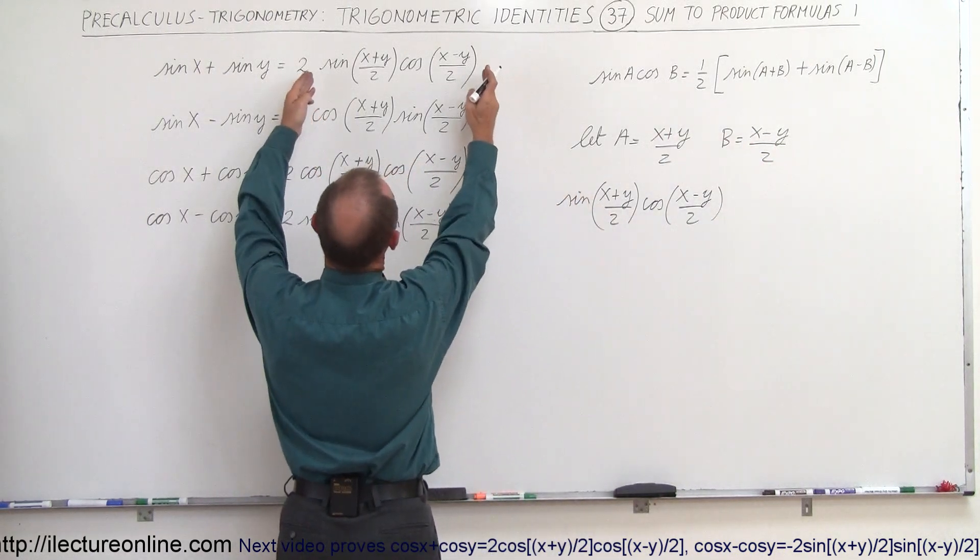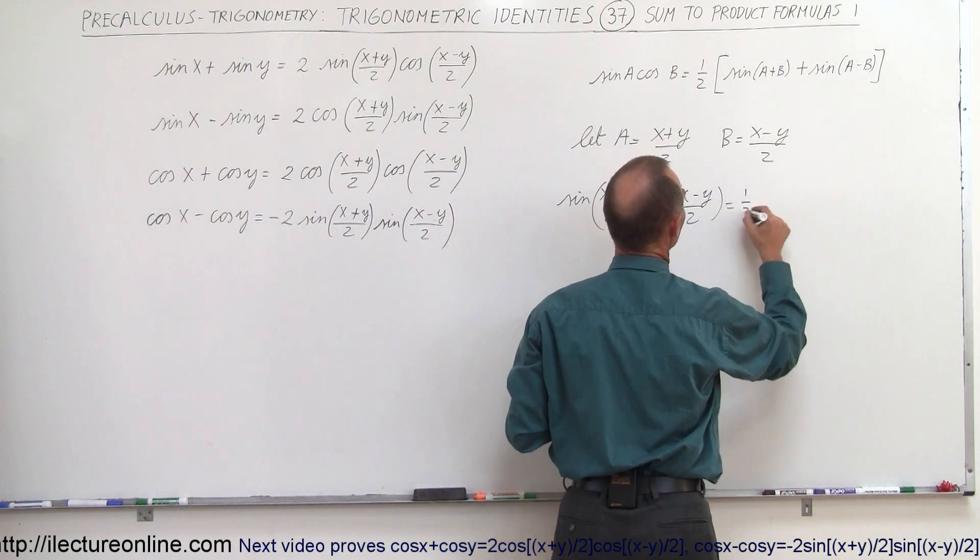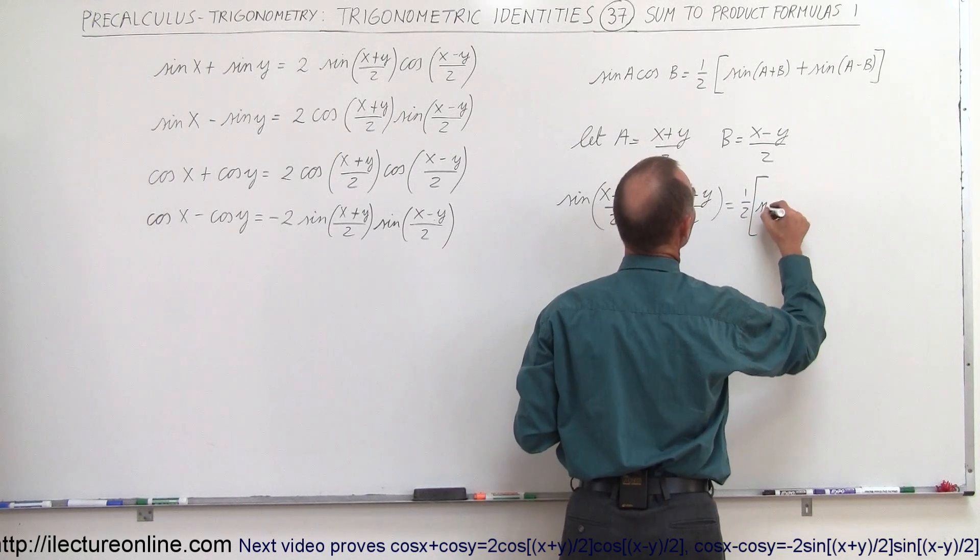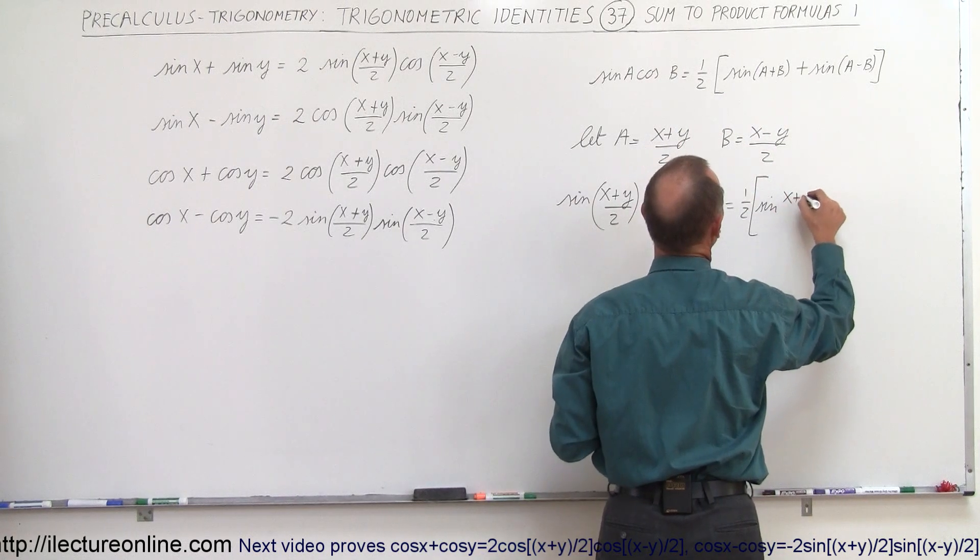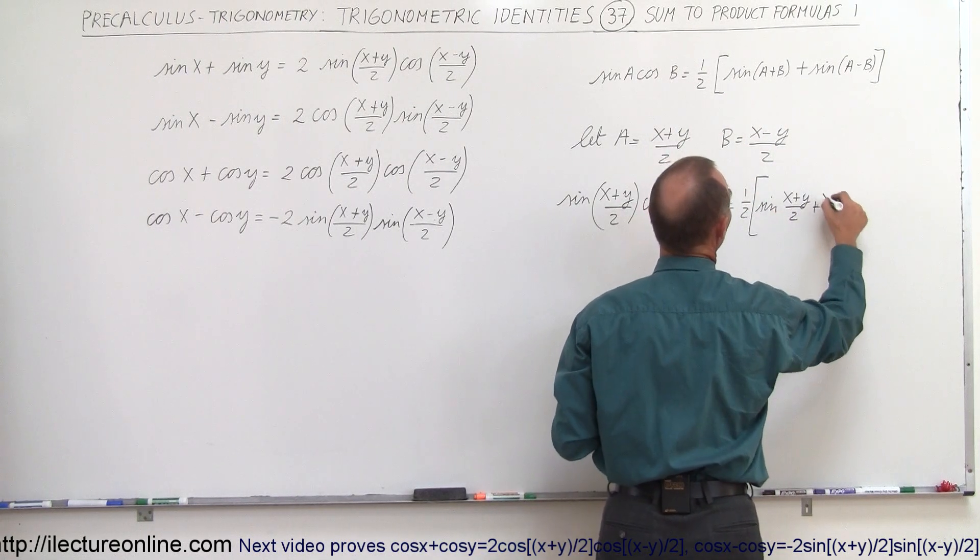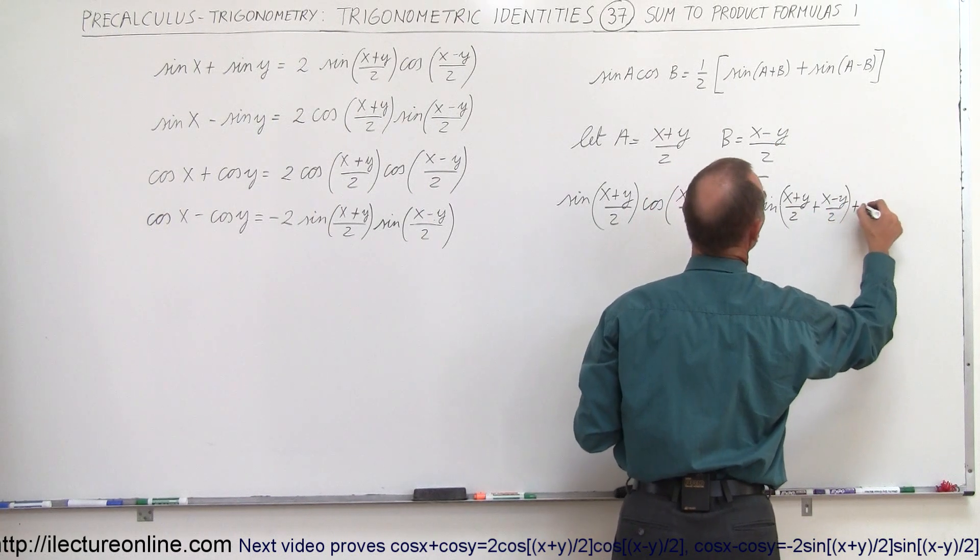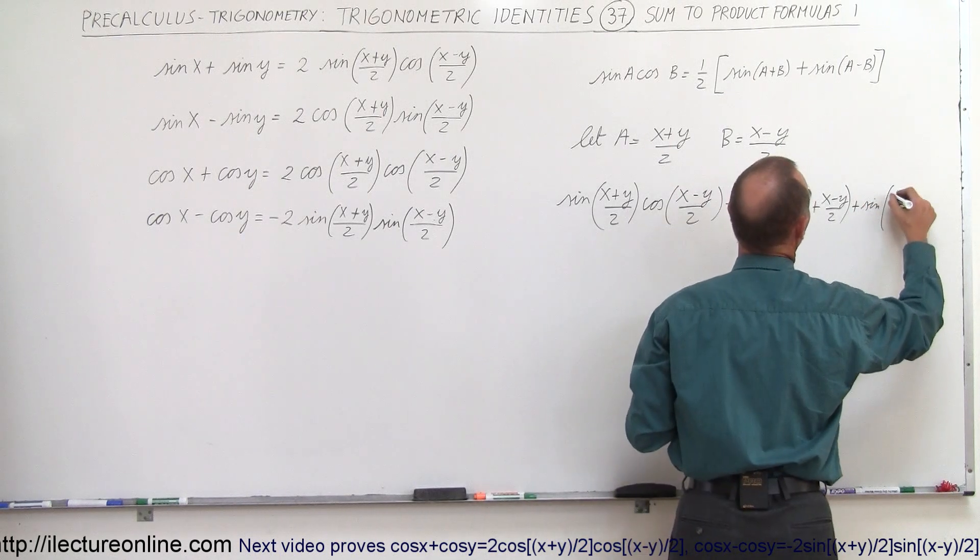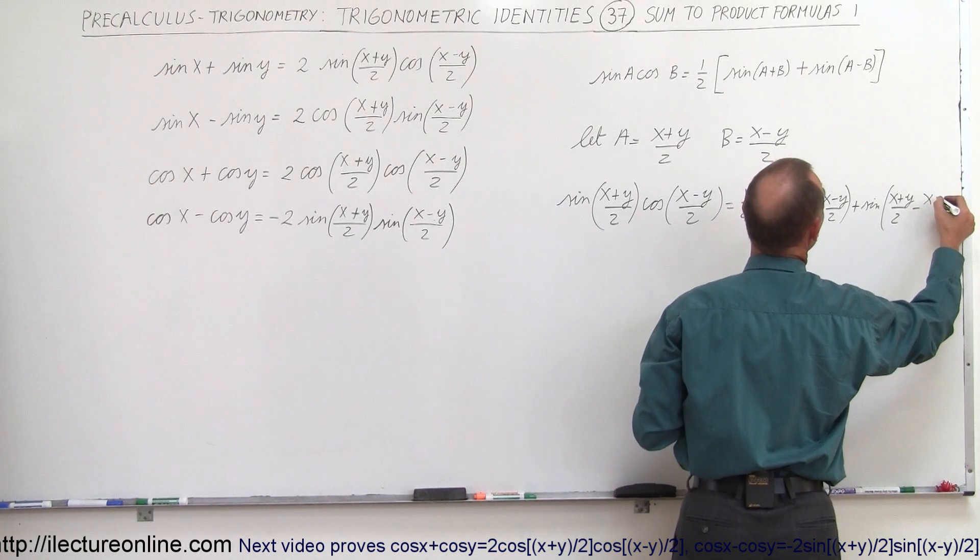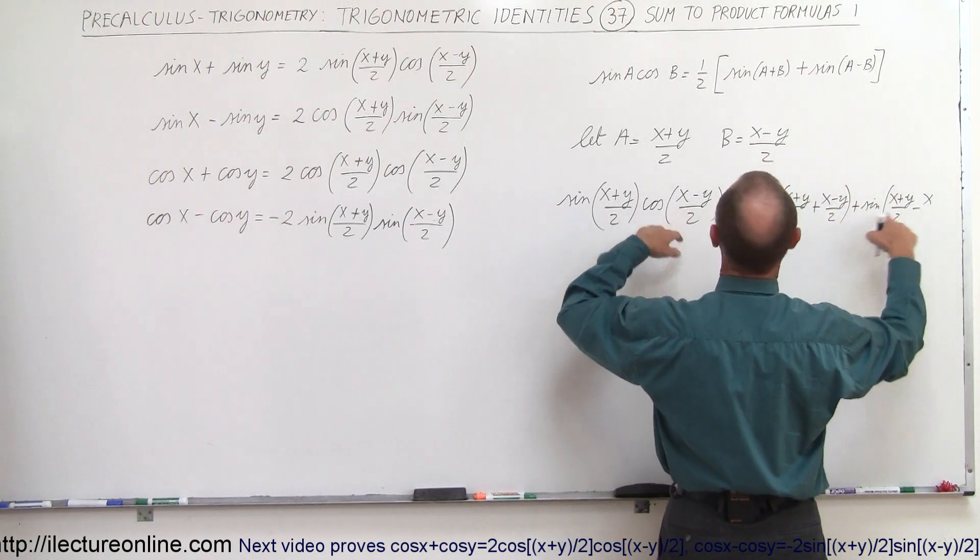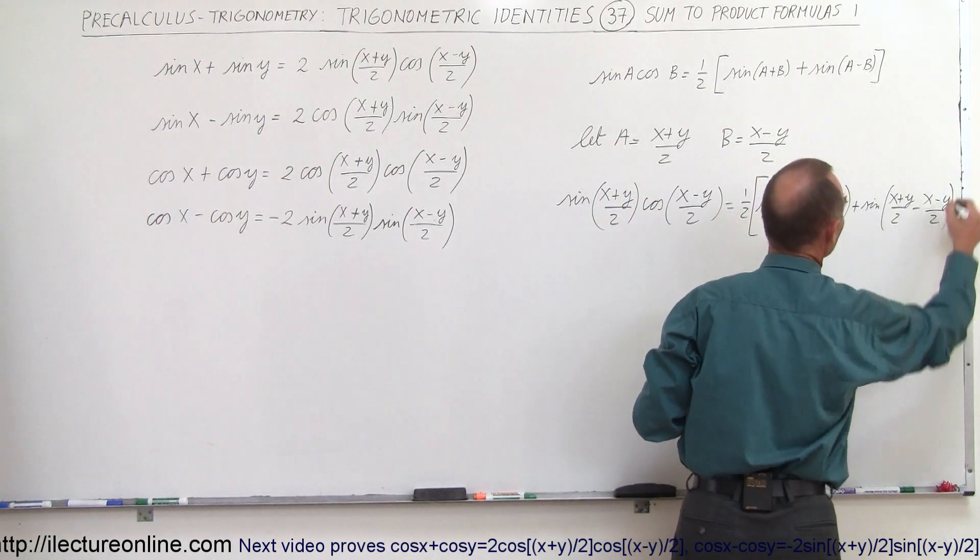Notice that this is what we have over here. So we're on the right track here. And so this is equal to 1 half times the sine. Now since a is x plus y divided by 2 we write x plus y divided by 2 plus b which is x minus y divided by 2 and plus the sine of x plus y divided by 2 minus x and b is equal to, where am I? b is right here, x minus y divided by 2.